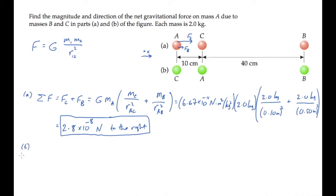We can solve part B in a similar way. The net gravitational force on mass A is due to the force from mass C directed to the left along the line joining their centers, plus the gravitational force from the more distant mass B, which is directed to the right.